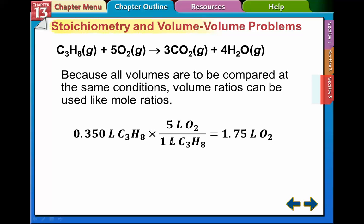We don't have to divide by anything because 1's on the bottom. So 0.35 times 5 gives me 1.75 liters of O2.